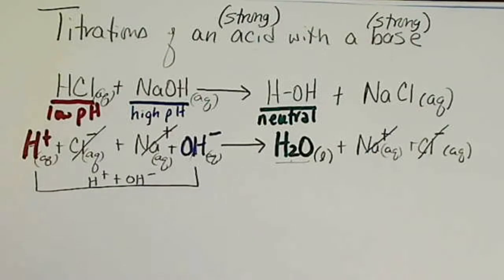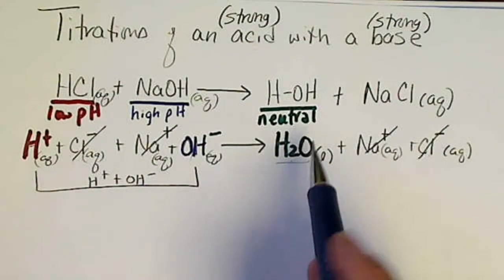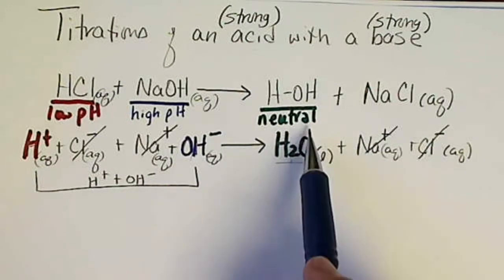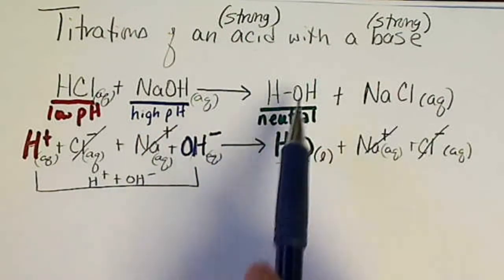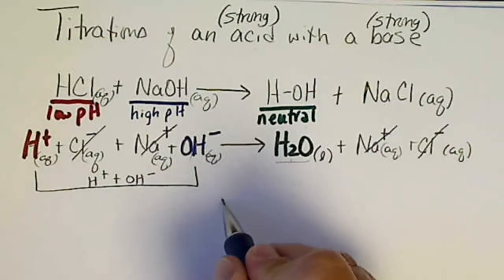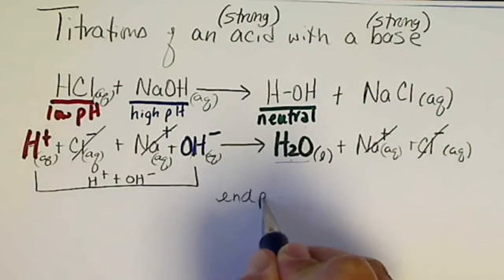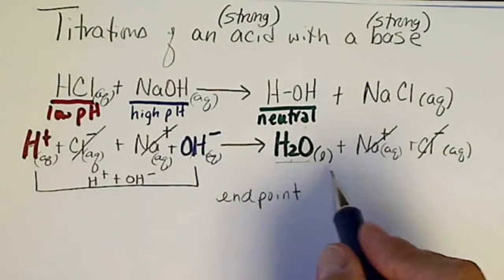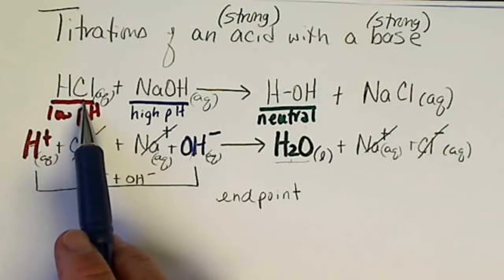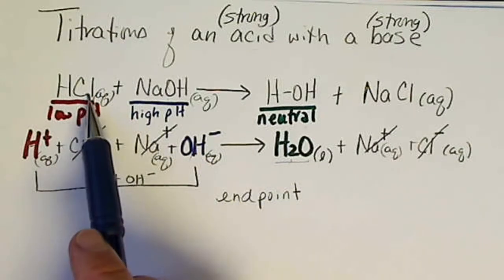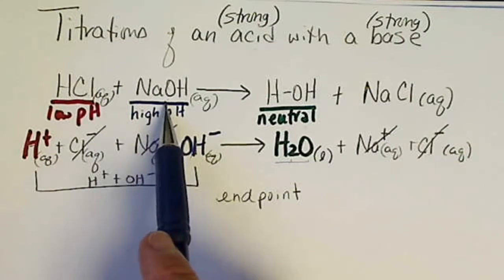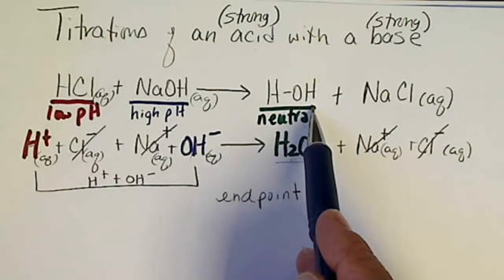When we've studied acid-base chemistry in the past, at least in introductory and general chemistry, we've assumed that the balanced equation goes to completion and we've reached the end point. In a titration, the end point is when we've used up all the HCl by adding the exact number of moles of NaOH. So if we have one mole of HCl, we add one mole of sodium hydroxide and make one mole of water.